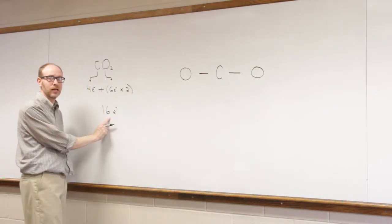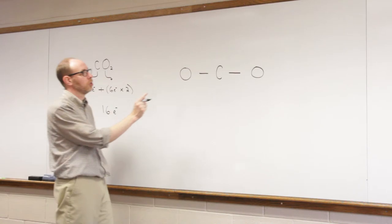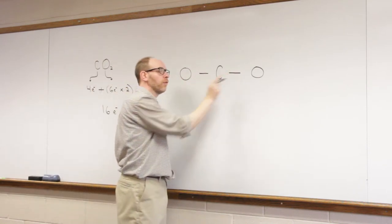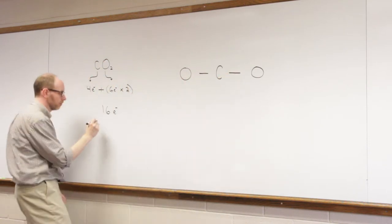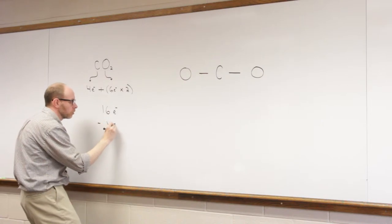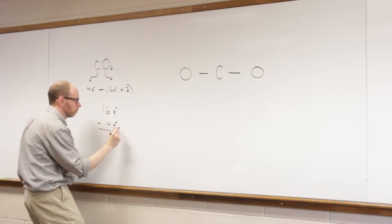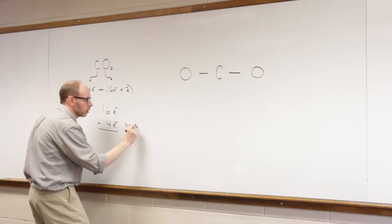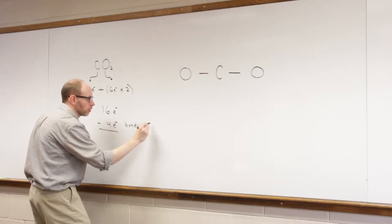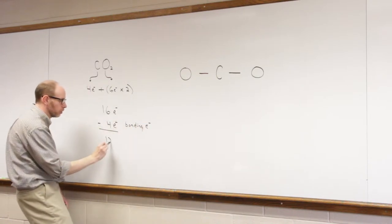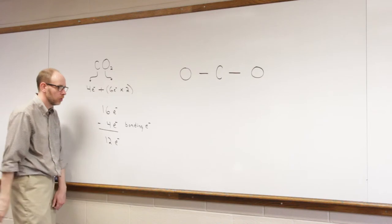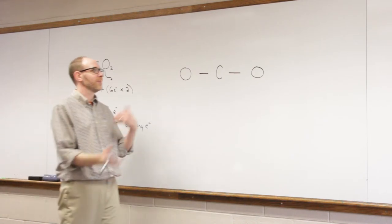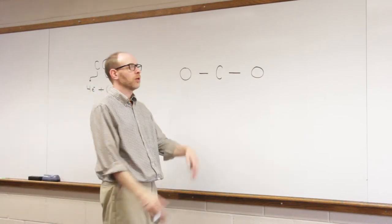So we've taken our 16 electrons total that we have. We have added 2, 4 in terms of bonds, so 4 bonding electrons. End up with 12 electrons total left over. So we still have to add 12 more.